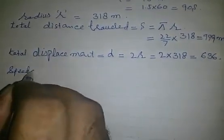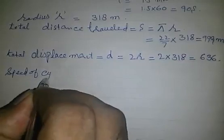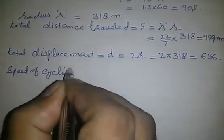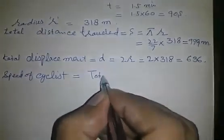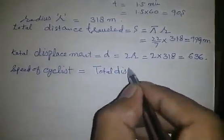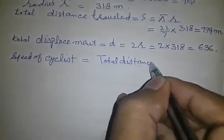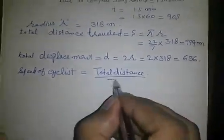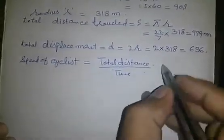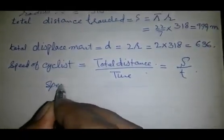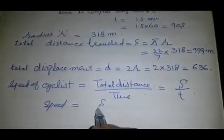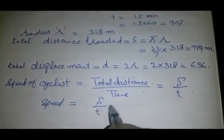Speed of cyclist equals total distance over time, which equals s over t.